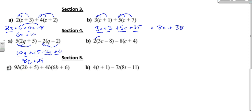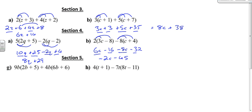Same again. 2 times 3c is going to be 6c. 2 times minus 8 is going to be minus 16 — making sure we get the signs correct. Minus 8 times c is going to be minus 8c. Minus 8 times 4 is going to be minus 32. 6c take away 8c is going to be minus 2c. For minus 16 take away 32, imagine the temperature: it's minus 16 and it gets 32 degrees colder, so that's minus 48.